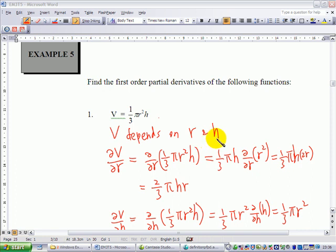To find partial dV/dR, this is equal to differentiate with respect to R: one-third pi R squared times H. Notice that when you do partial derivative with respect to R, you keep H constant.